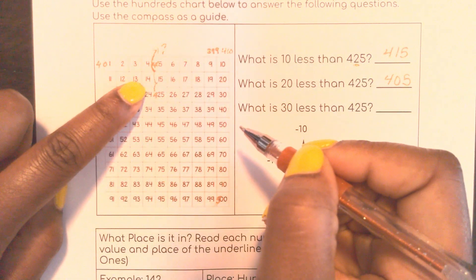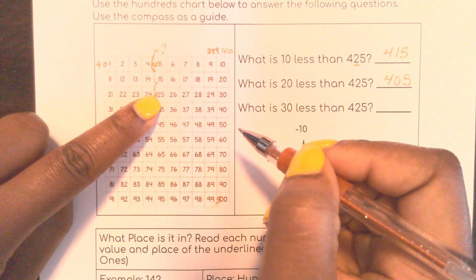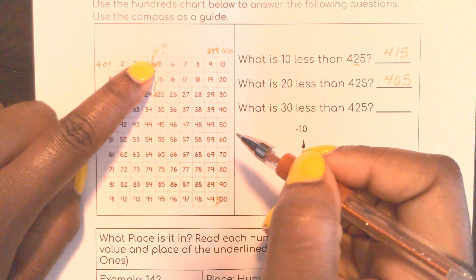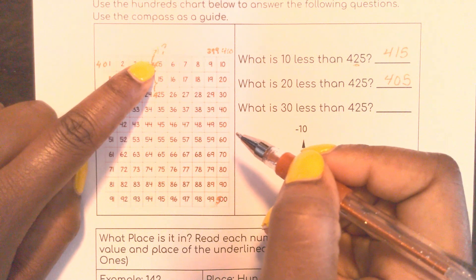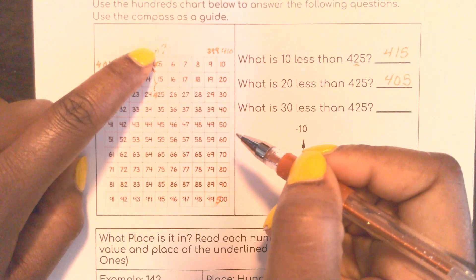400. So here I have 425, 415, 405. In the previous 100, this would be 395.